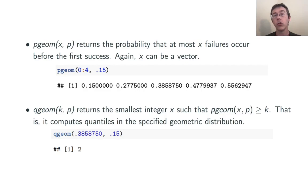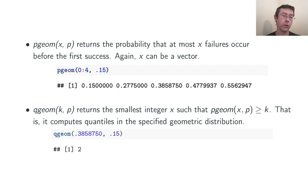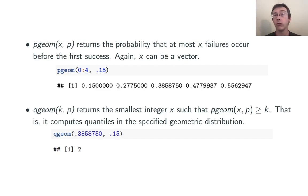Finally, qgeom is the inverse cumulative distribution function. Specifically, it returns the smallest integer x such that pgeom(x, p) is greater than or equal to k — it's computing quantiles in the specified geometric distribution. For instance, qgeom(0.3858750, 0.15) is 2, because pgeom(2, 0.15) is 0.3858750.